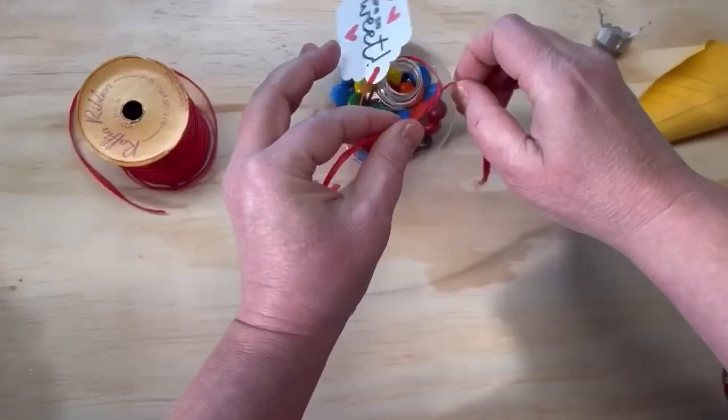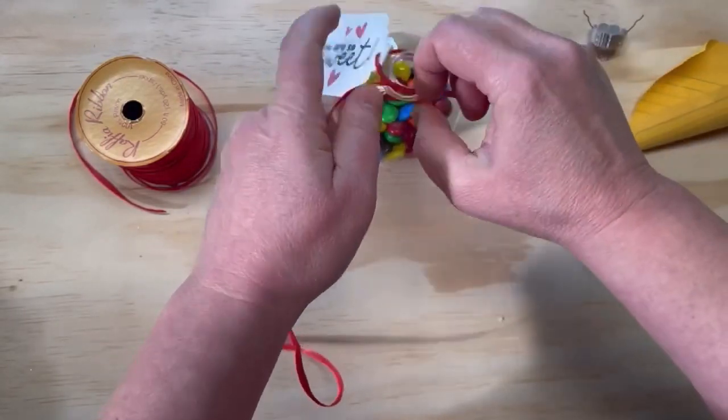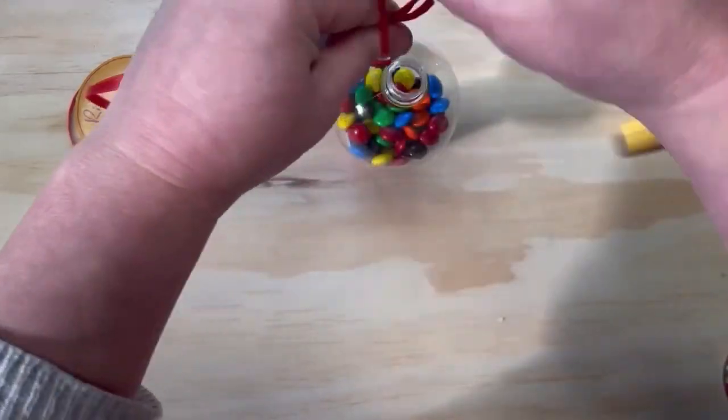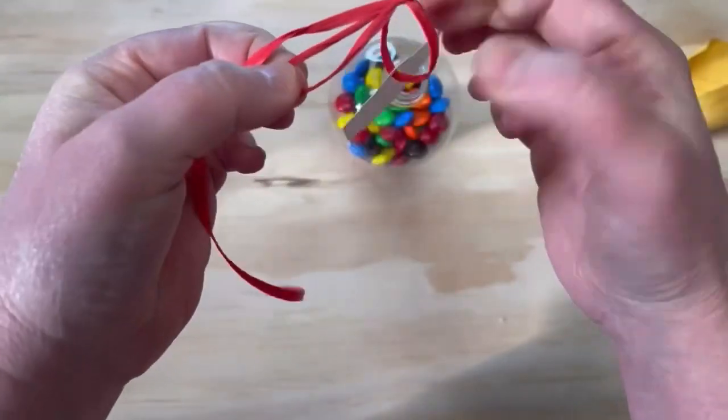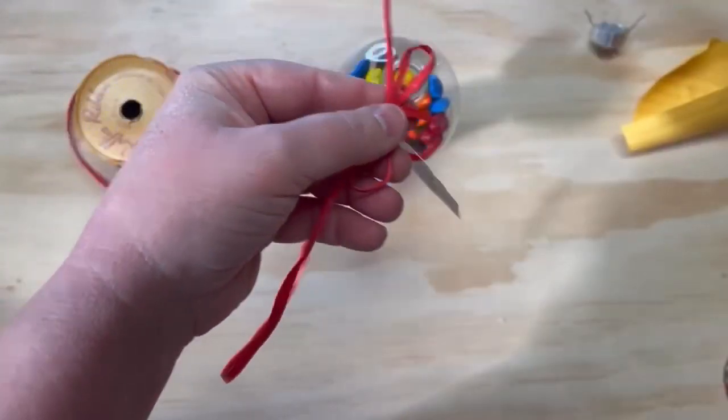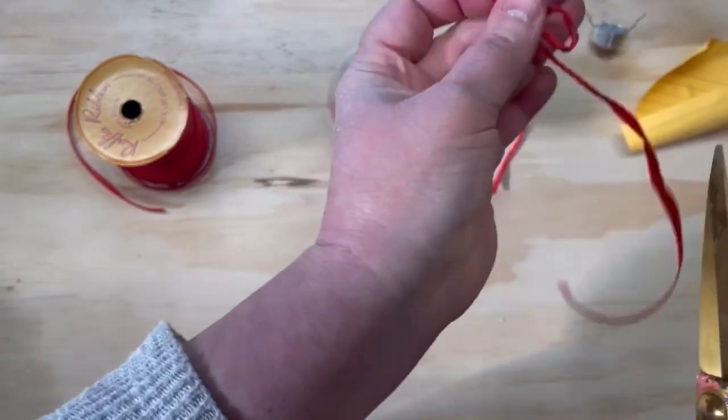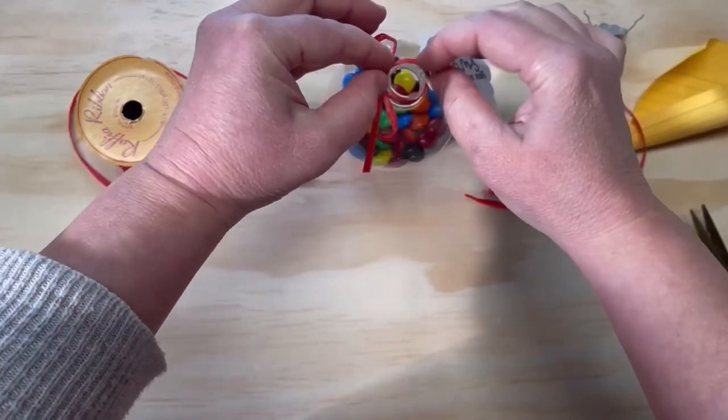All right, so we did that, and then all we're going to do is put our cute little raffia ribbon, which I got on clearance by the way, it's Christmas clearance, and I just tied a bow. Make sure that the lid for your ornament is off before you put this on, and the only reason why is because the ornament lid will hold this on. So I just cut off the excess of the ribbon.